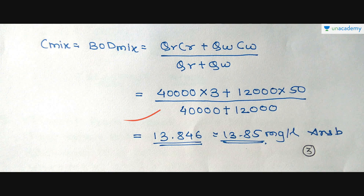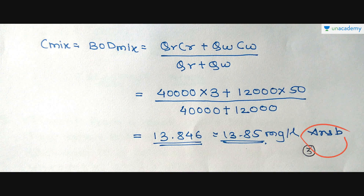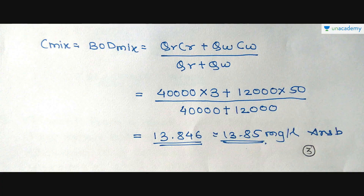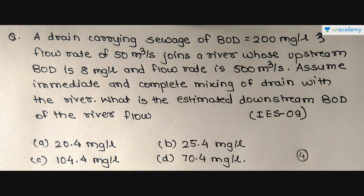Putting in all values: (40,000 × 3 + 12,000 × 50) / (40,000 + 12,000) = 13.846 ≈ 13.85 mg/L. This matches Option B. The correct answer for this question is Option B, that is 13.85 mg/L is the BOD of the mixture.